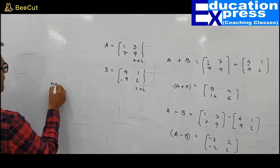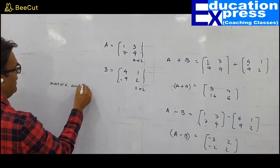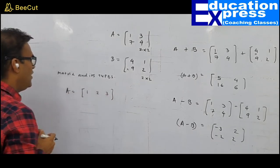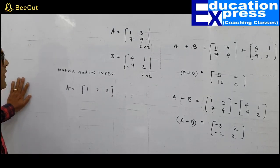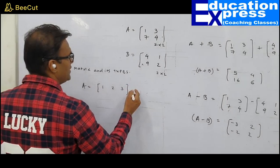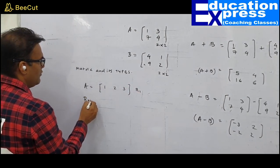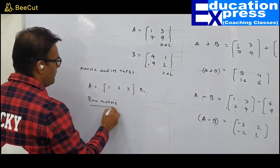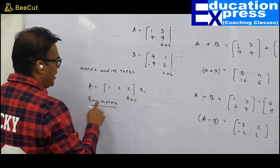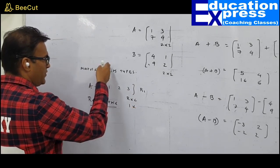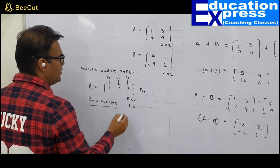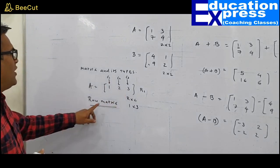Matrix types: First, consider the matrix [1, 2, 3]. It has only one single row — this is called a row matrix. The order of any matrix is row × column. This matrix has 1 row and 3 columns, so its order is 1×3. It is called a row matrix.